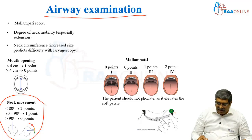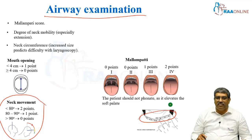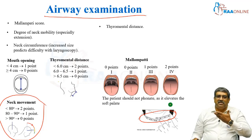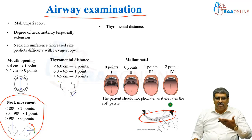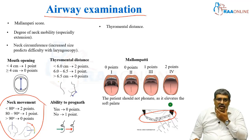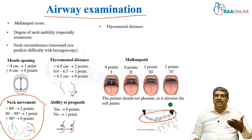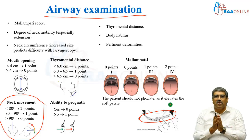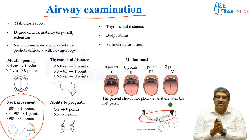Your neck circumference and your thyromental distance — if it is greater than 6.5, it is normal. And you look at the ability to move the mandible over the maxilla. You also look at any various other airway abnormalities.